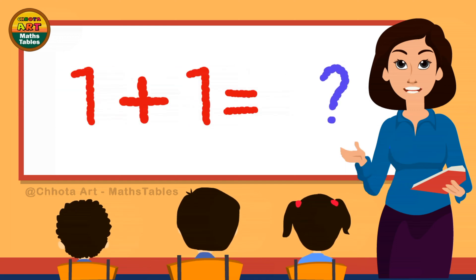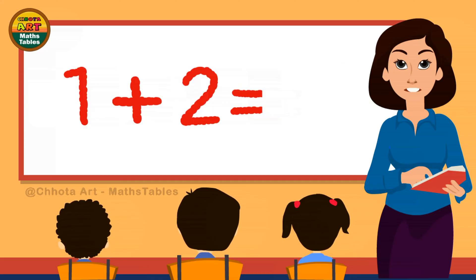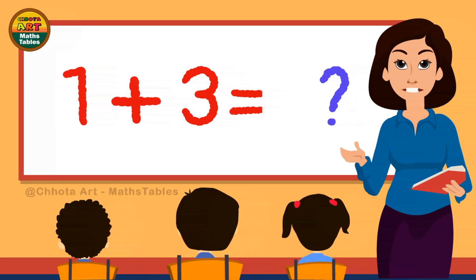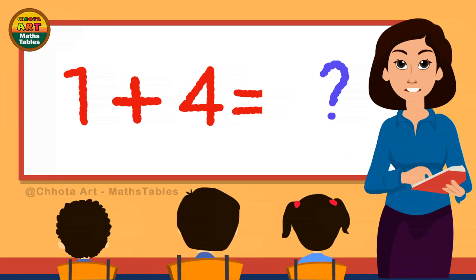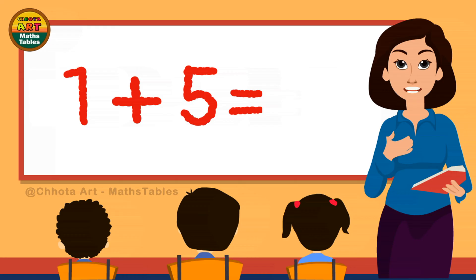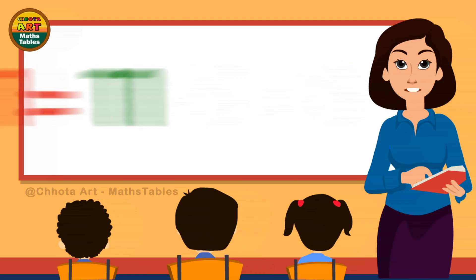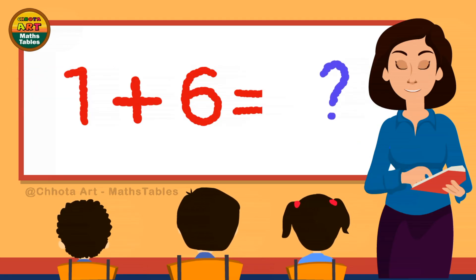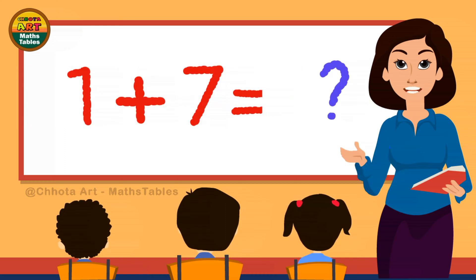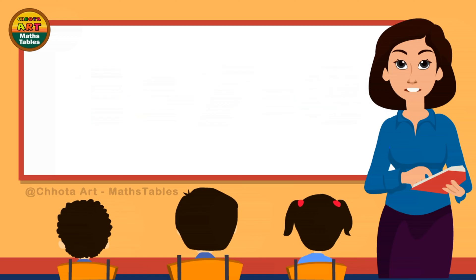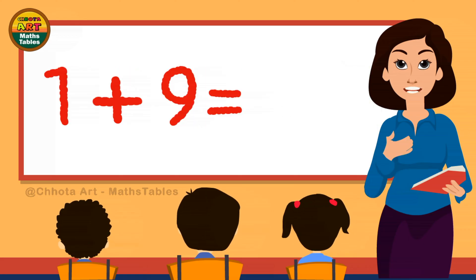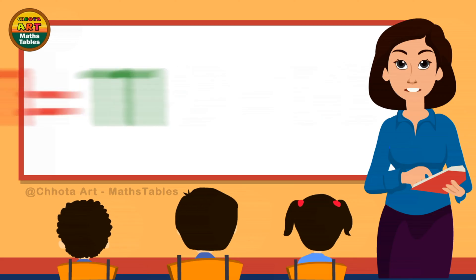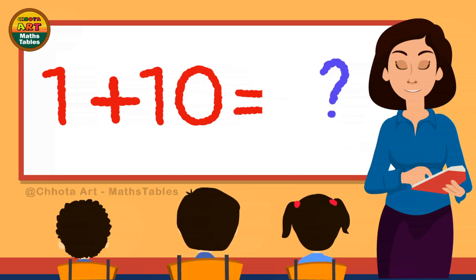1 plus 1 is 2. 1 plus 2 is 3. 1 plus 3 is 4. 1 plus 4 is 5. 1 plus 5 is 6. 1 plus 6 is 7. 1 plus 7 is 8. 1 plus 8 is 9. 1 plus 9 is 10. 1 plus 10 is 11.